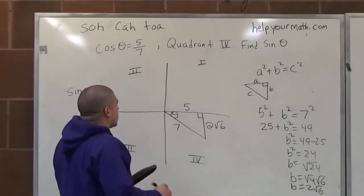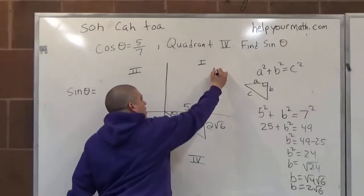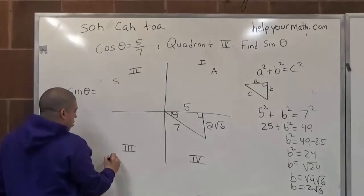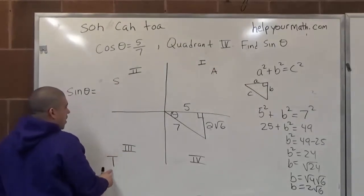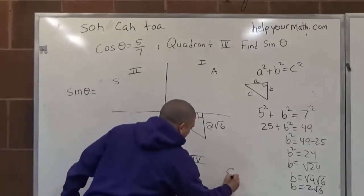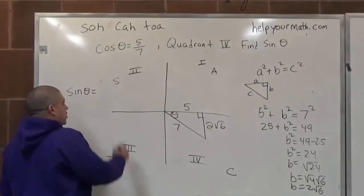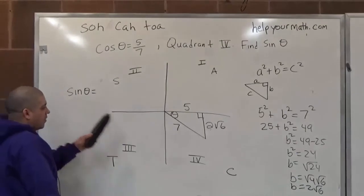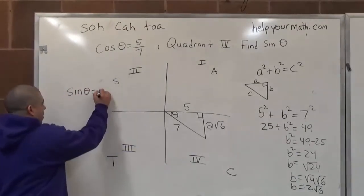All functions are positive in quadrant 1. Only sine is positive in quadrant 2. Only tangent is positive in quadrant 3. And only cosine is positive in quadrant 4. So in this region, only cosine is positive, meaning sine is going to be a negative value.